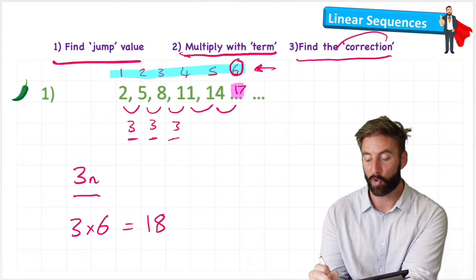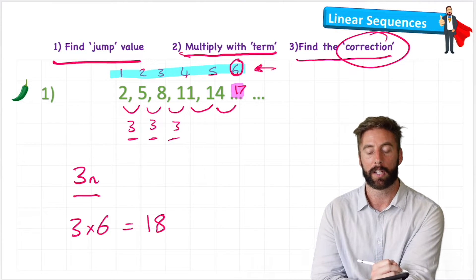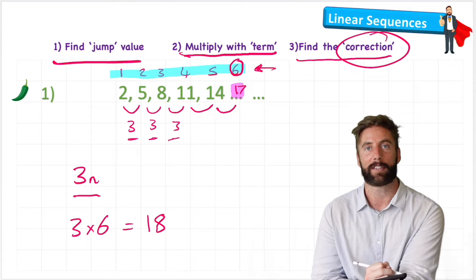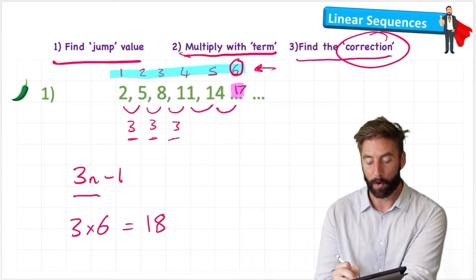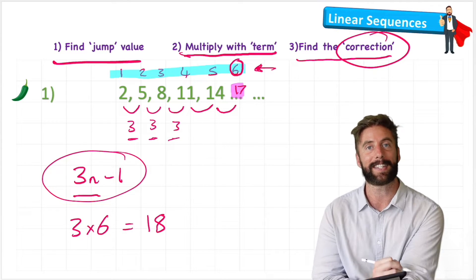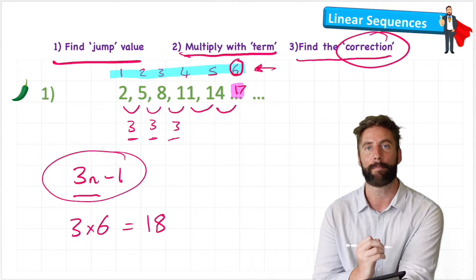So I need to correct my formula. How can I get from 18 down to 17? Well, I can minus 1. So therefore, my formula for this sequence is 3n minus 1.